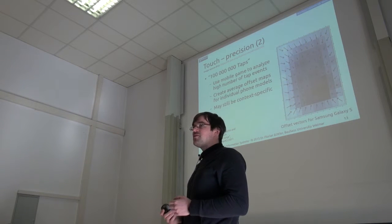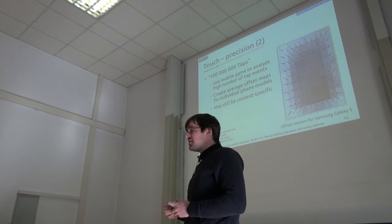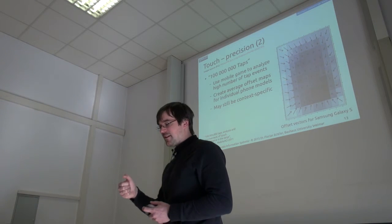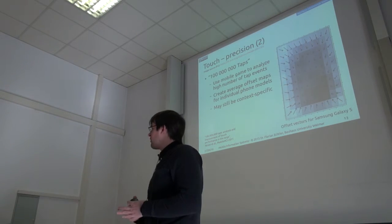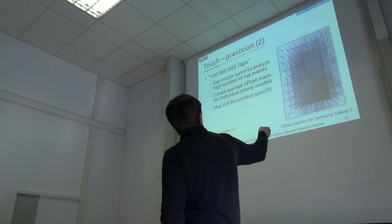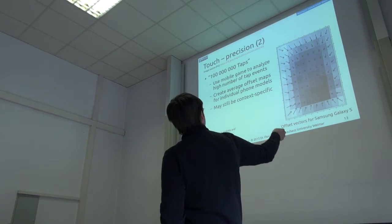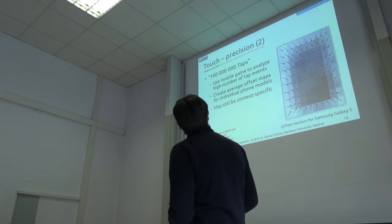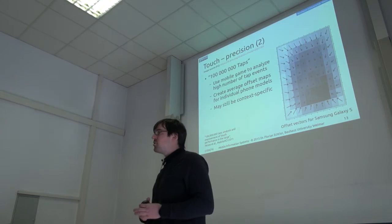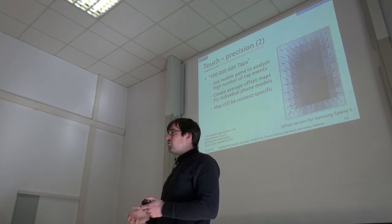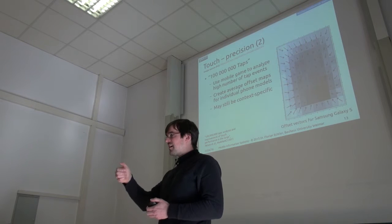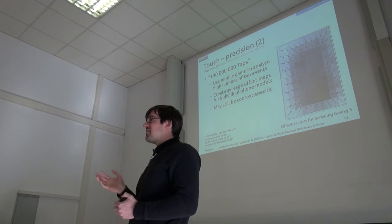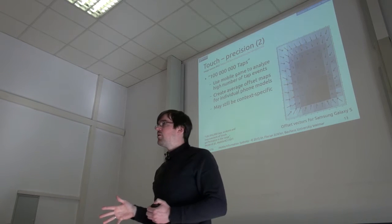Because of these bubbles on the screen, they knew where the user was aiming at and where the actual touch point was. From this you can, for example, for different devices calculate these offset vectors, which show you at what point the touch will be off by what dimension. This is, of course, different by phone model.